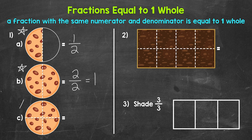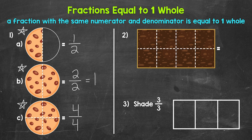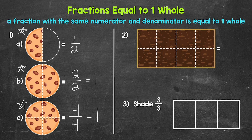Let's move on to cookie C. Just like cookie B, we have the whole cookie here. But this cookie has been divided into a total of four equal parts, so four is the denominator. All four parts are left, so four is our numerator as well. Four fourths equals one whole. It doesn't matter how large or small the numbers are — if the numerator and denominator are the same, that fraction equals one.